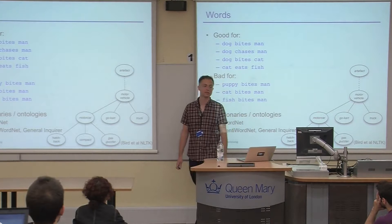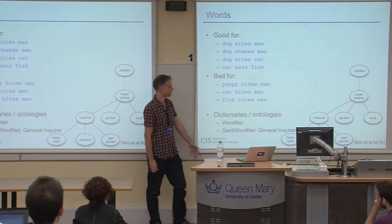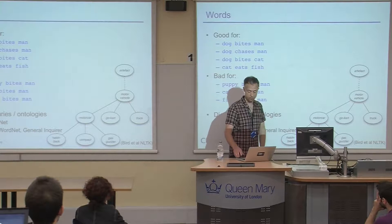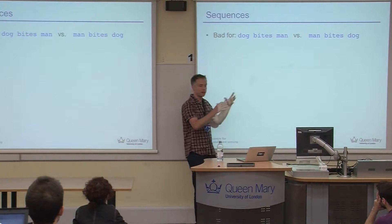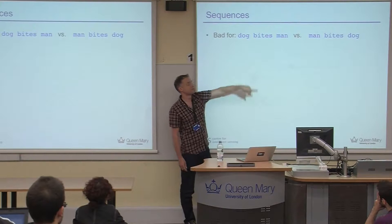There are ways around this — people have spent decades building clever ontologies like WordNet that tell us exactly how 'puppy' relates to 'dog.' For sentiment analysis there are specific ones like SentiWordNet and General Enquirer. But we've also run into another problem: we're totally ignoring any notion of sequence or structure. Even the cleverest ontology can't, in principle, tell you the difference between 'Dog bites man' and 'Man bites dog' — one is unremarkable, the other is headline news, yet they contain exactly the same words.